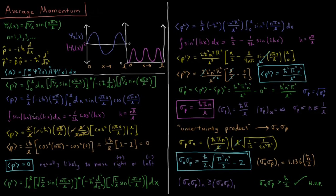The value of that integral is minus 1 over 2k times cosine squared(kx) — an integral solvable by substitution. For our value k = nπ/l, substituting in, we have the expectation value of momentum equal to 2 over l times minus i h-bar times nπ/l. Then substituting in the minus 1 over 2k factor, we get minus l over 2nπ times cosine squared(nπx/l) evaluated from 0 to l. After cancellations, we're left with i h-bar over l times cosine squared(nπ) minus cosine squared(0).